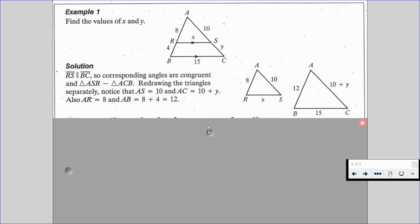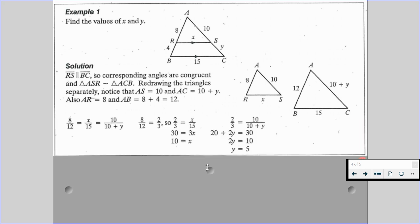Knowing this, it'll help us to solve for X and Y. Well, as we set up our proportions, 8 over 12 is equal to X over 15, which is equal to 10 over 10 plus Y. We can break it up. 8 over 12 is 2 thirds. So 2 thirds is equal to X over 15. We solve for X, and we get that X is going to be equal to 10.